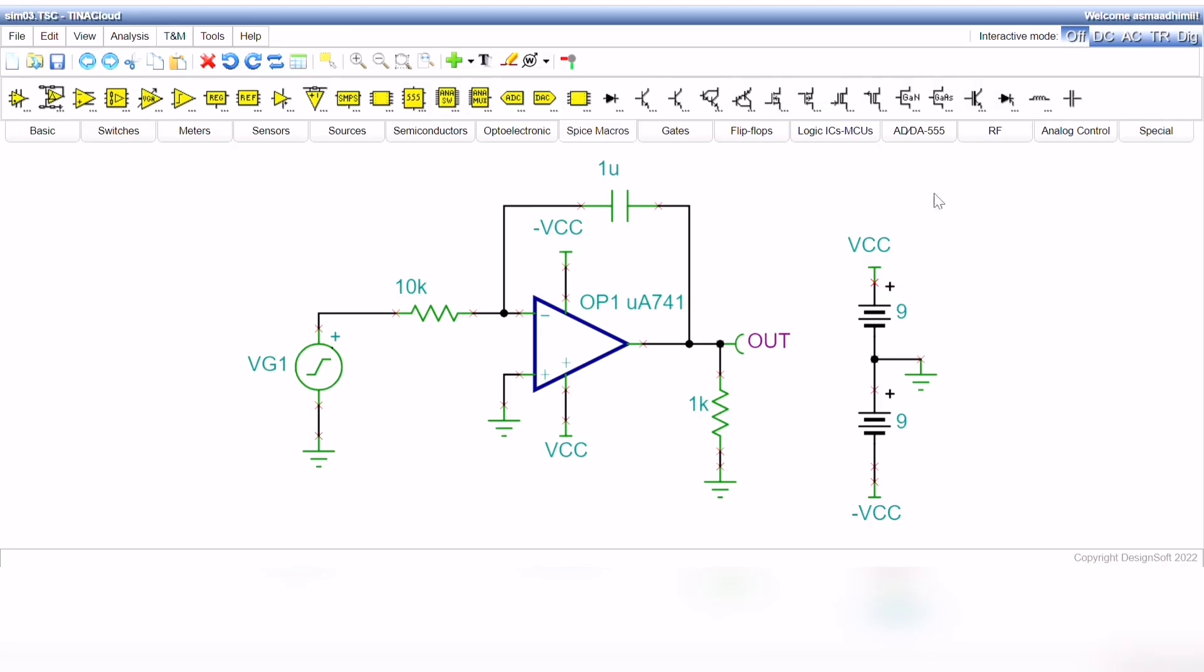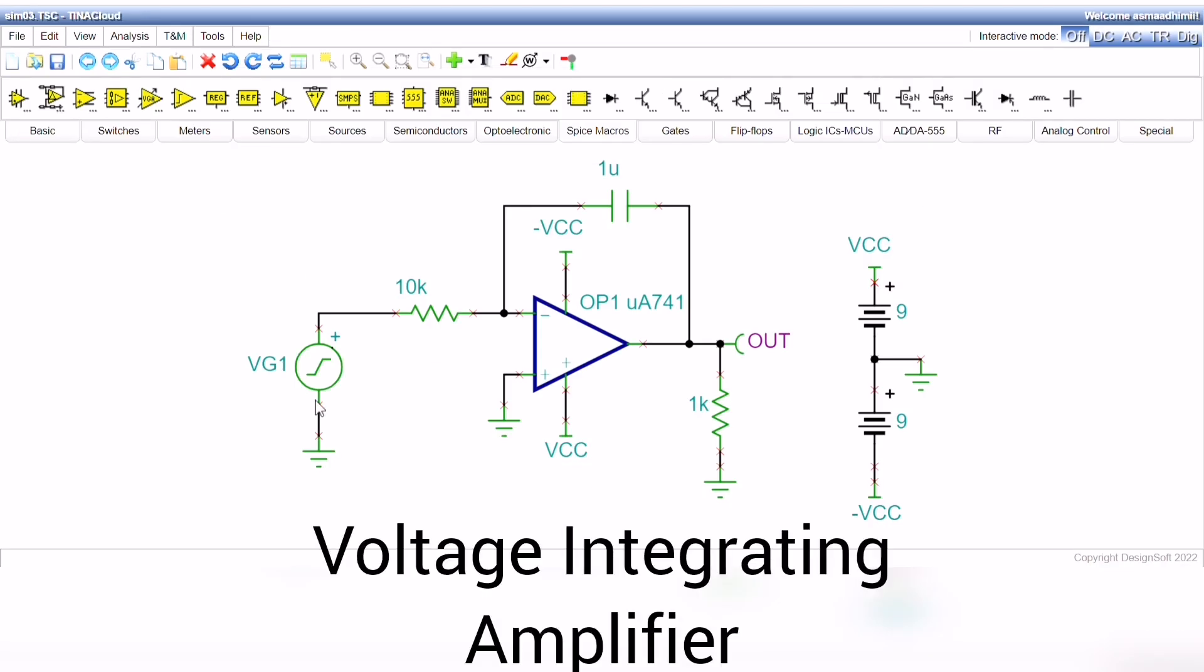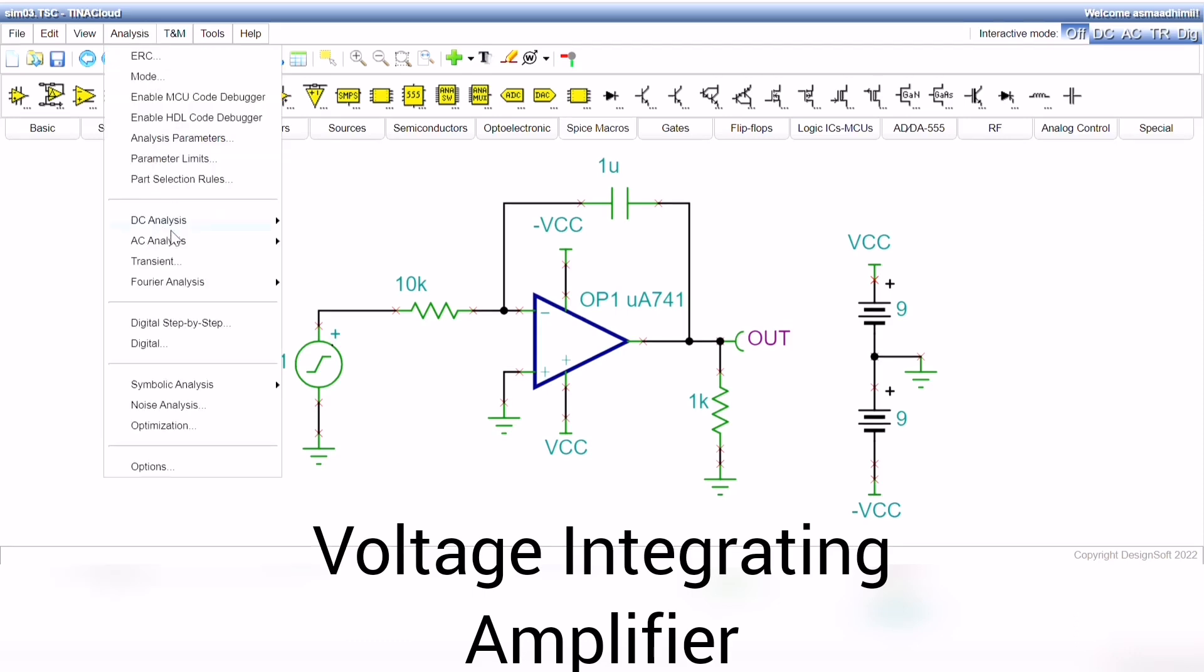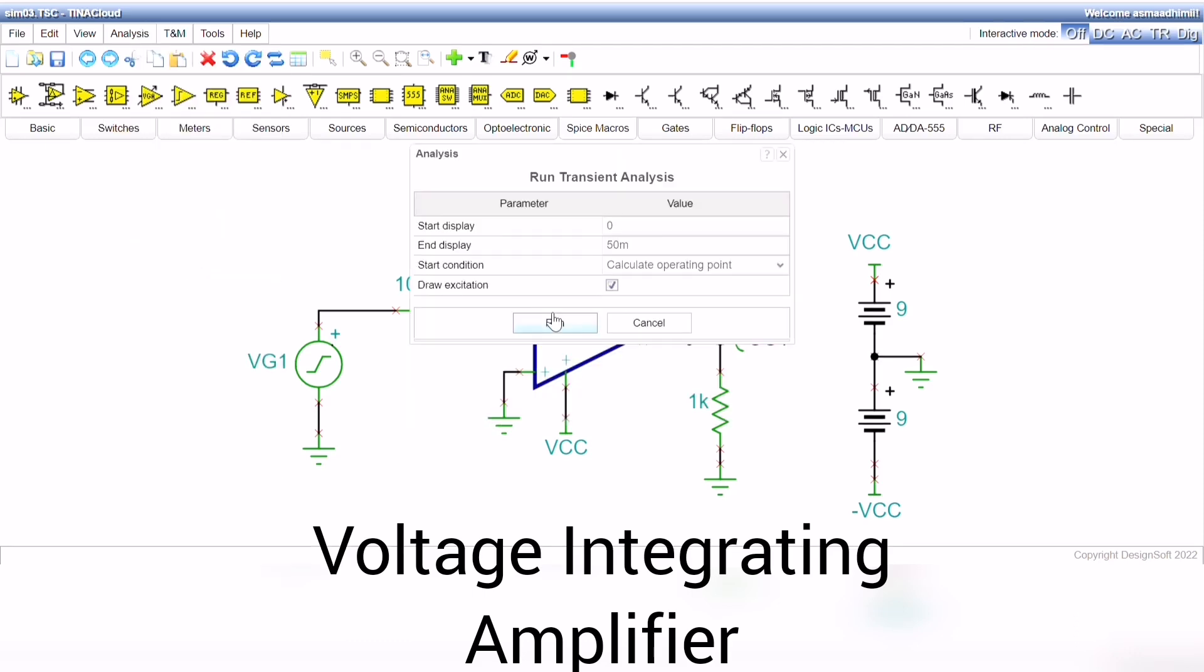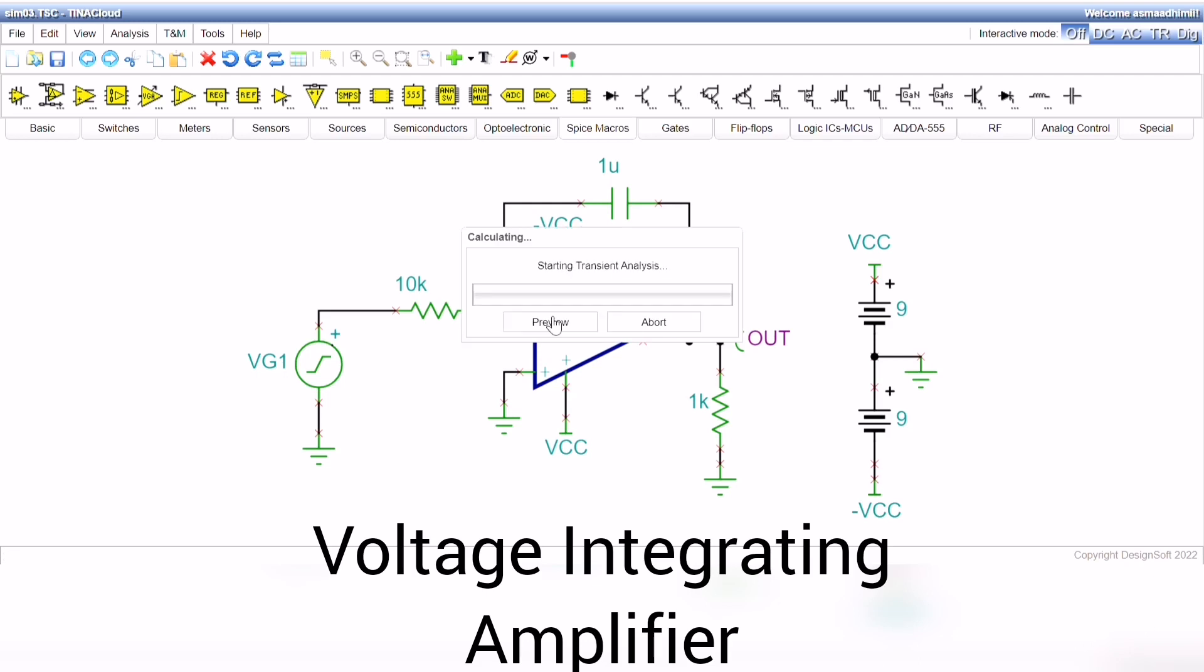Our last example is a voltage integrating amplifier. The voltage generator is set to generate square-wave voltage with an amplitude of 10mV. Run this simulation, and you will see the applied and the output voltage.